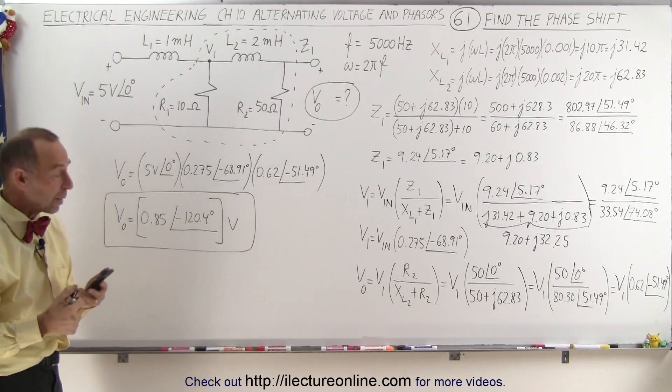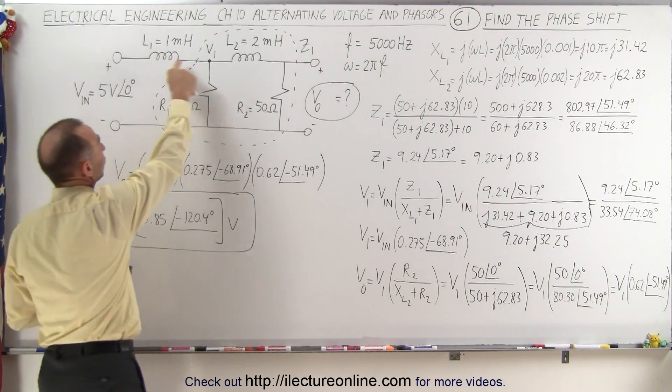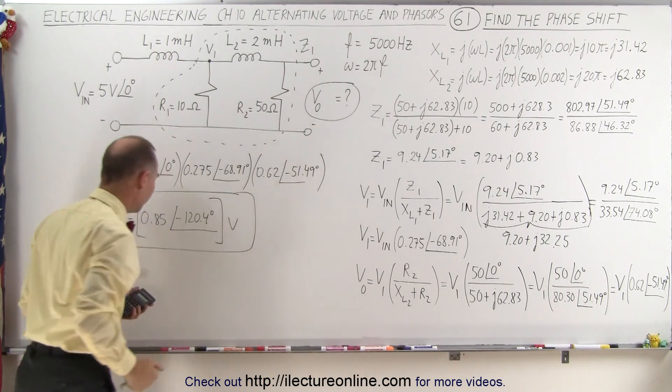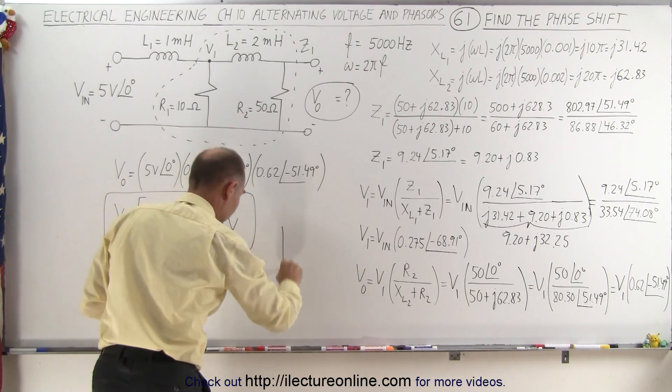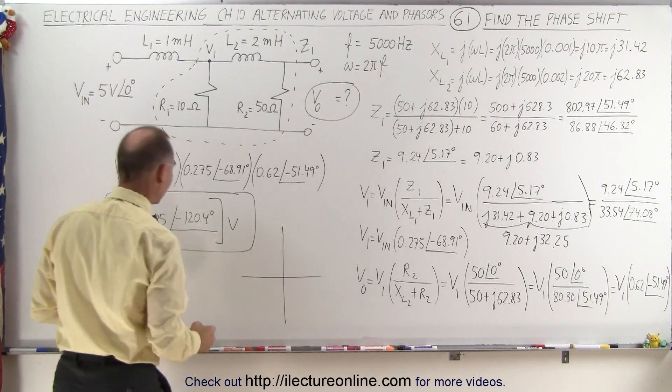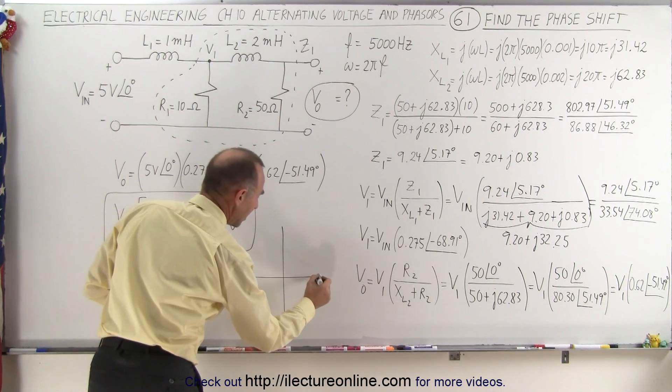Notice the phase shifting is now in the negative direction because we have the inductors over here and the resistors over there. It's 120 degrees, that's more than 90 degrees. So if you do a diagram of that, you can see that this would be the input voltage.